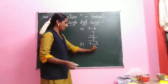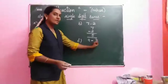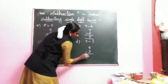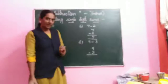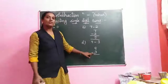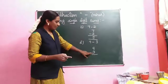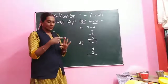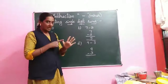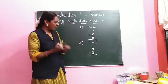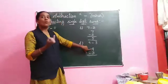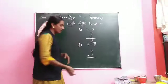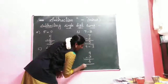Next sum: 9 minus 3. Take the bottom number 3 first. Count after 3: 4, 5, 6, 7, 8, 9 — stop at 9. How many fingers? 6 fingers. So the answer is 6.